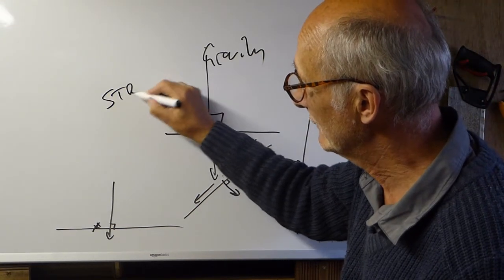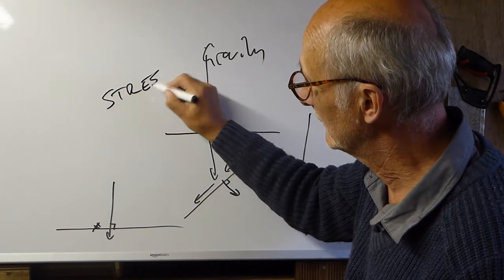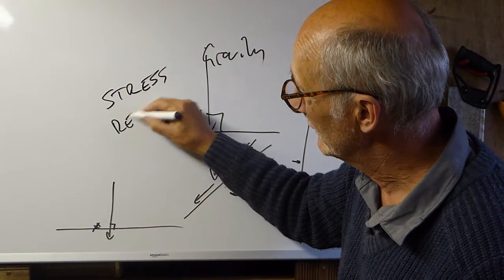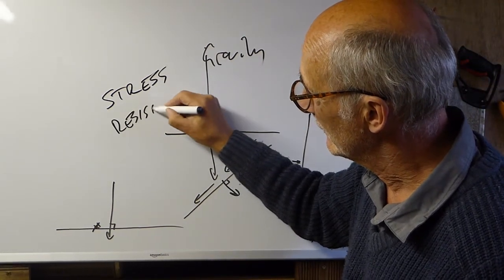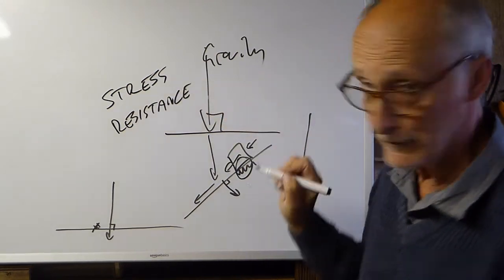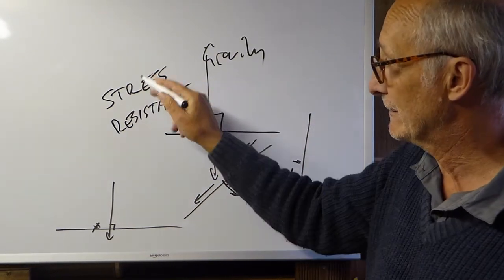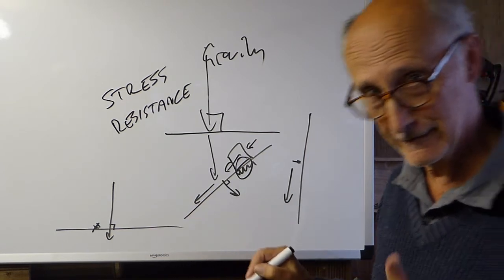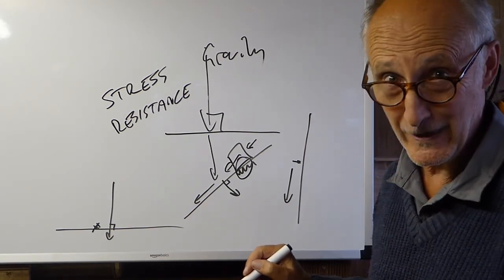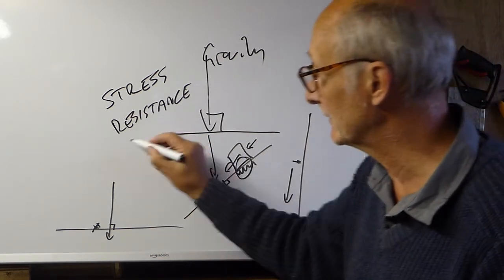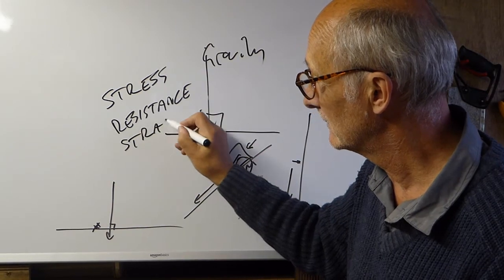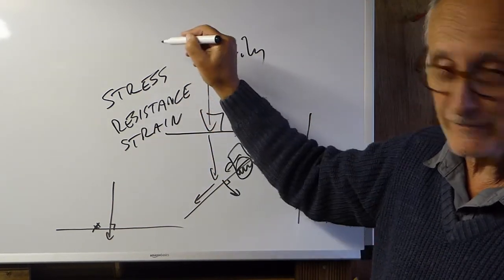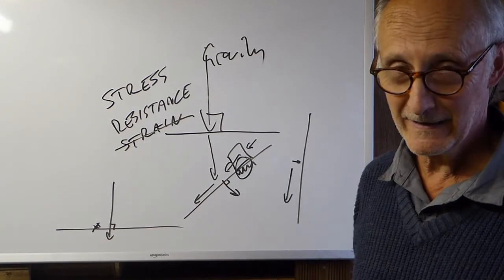So, we have stress — the applied force — fighting against resistance or strength. If the stress is greater than the strength, greater than the resistance, then there will be strain or movement. If the strength is greater than the stress, then there won't be any movement — you won't have any strain.